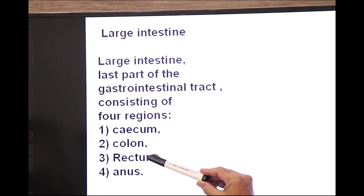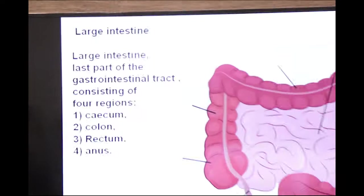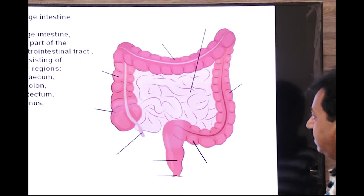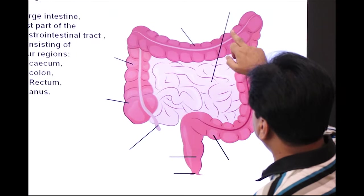Large intestine is the last part of gastrointestinal tract consisting of four regions: cecum, colon, rectum and anus. Now you see here the diagram showing large intestine.